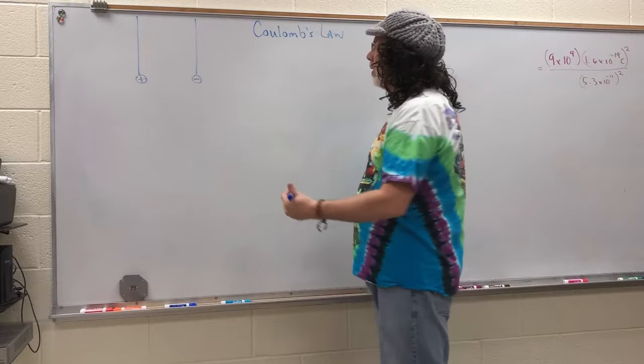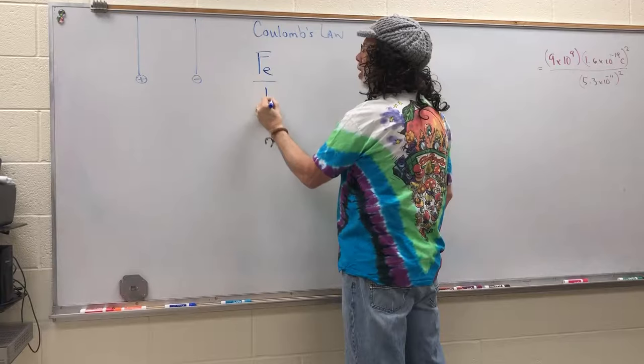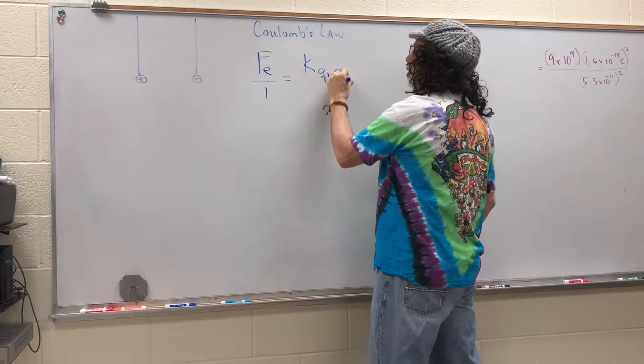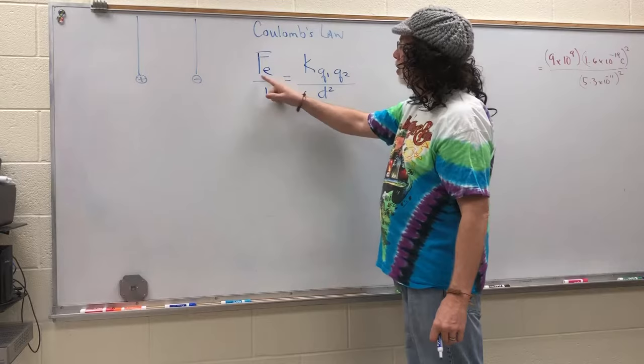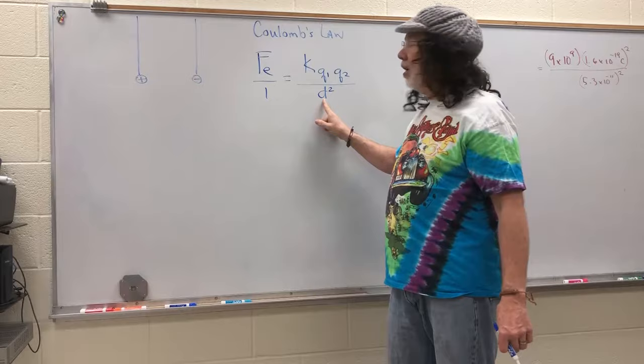Let's write that formula on the board. The electrical force, F, is equal to k times q1 times q2 all over d squared. This is one of several inverse square laws, and it's called that because the force is inversely proportional to the square of the distance.